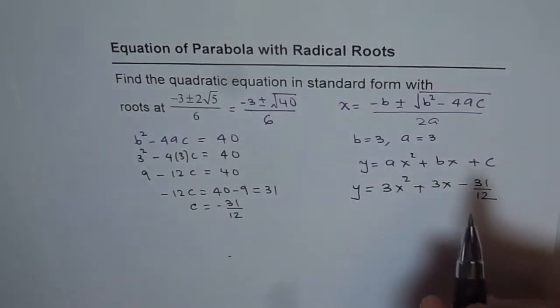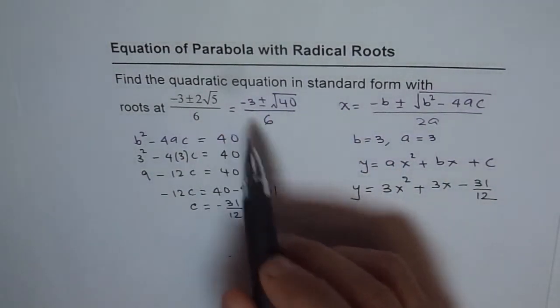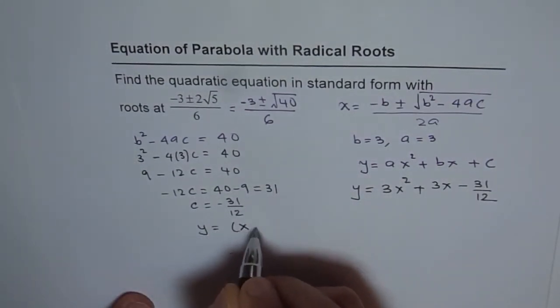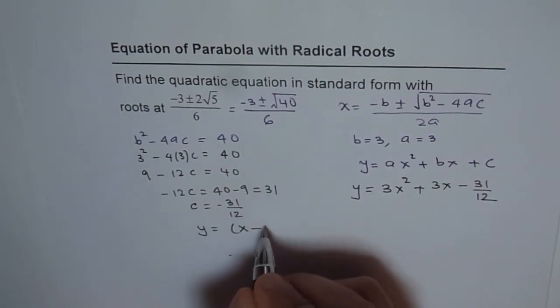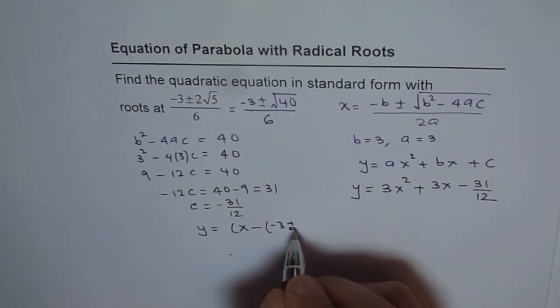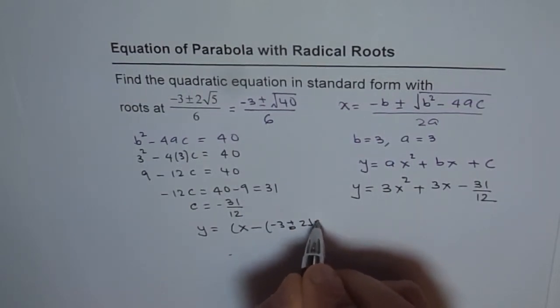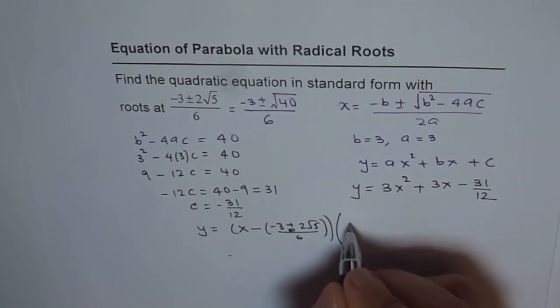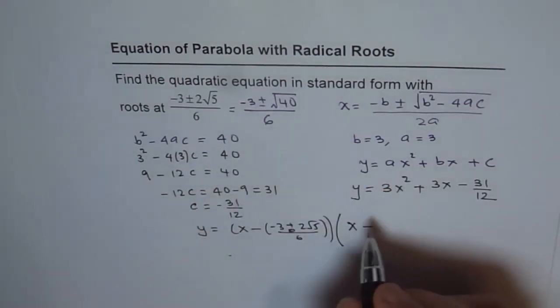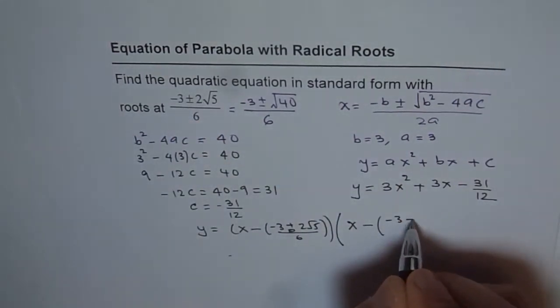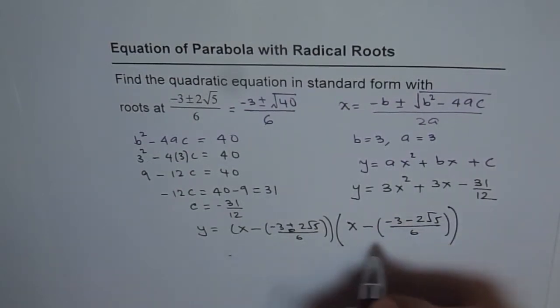The other option could have been to expand the factors. Since these are the roots, you could write y = (x - ((-3 + 2√5)/6))(x - ((-3 - 2√5)/6)). That's using one root at a time with the appropriate signs.